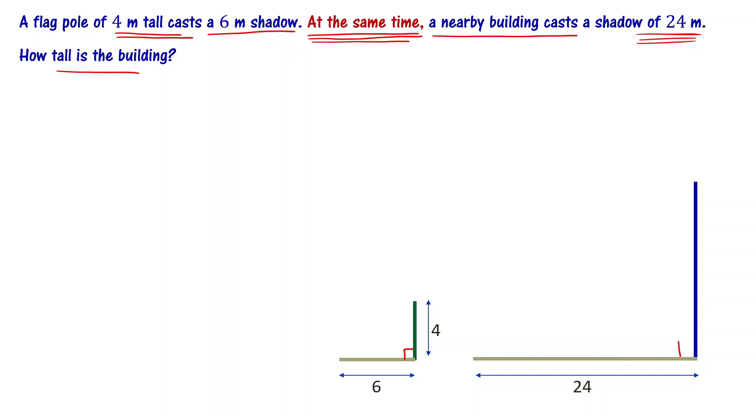At the same time — what is important about this? At the same time means the angle of elevation of the sun is the same for both the flagpole and the building.